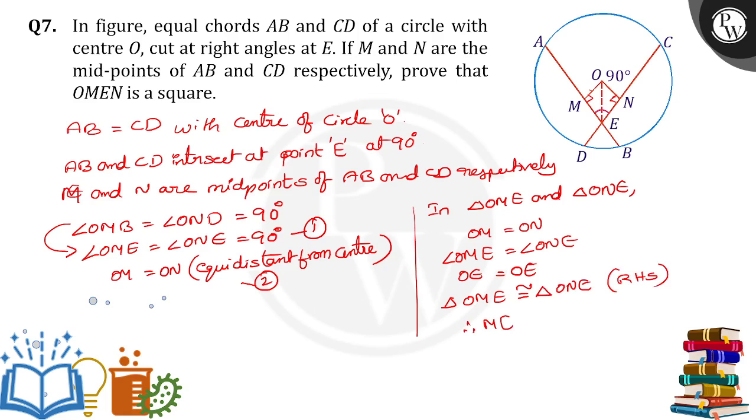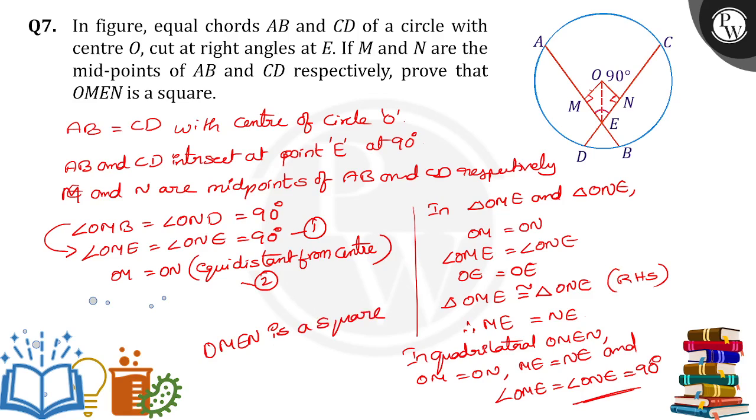Therefore from CPCT we can say that ME is equal to NE. In quadrilateral OMEN we got OM is equal to ON and ME is equal to NE and angle OME equal to 90 degrees. So opposite pair of angles are equal, opposite pair of sides are equal, so the given quadrilateral OMEN is a square.